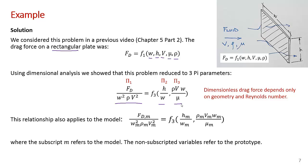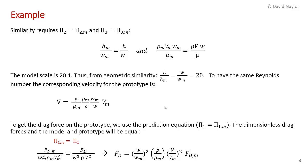We can write pi 1 as some function of pi 2 and pi 3, with subscripts m for the model. The really important assumption — and it's a very valid one — is that the function is exactly the same for model and prototype. Similarity requires that the pi parameters on both sides are equal. So we need pi 2 of the prototype equal to pi 2 of the model, and pi 3 of the prototype equal to pi 3 of the model. That means we have to have the same aspect ratio (height to width ratio) and the same Reynolds number in order to have similarity.